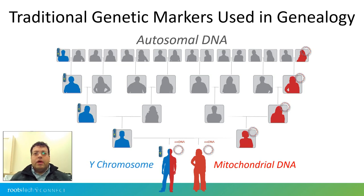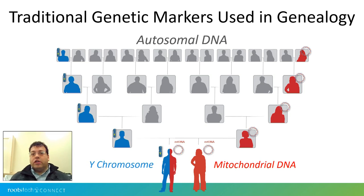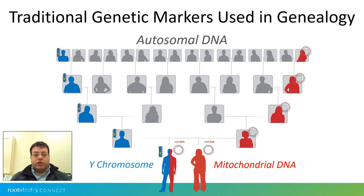In the case of mitochondrial DNA, it follows the maternal line — the straight, unbroken mother-to-daughter line. Both males and females have mitochondrial DNA, although only females can pass it on to the next generation, so it stops with a male. I have my mother's mitochondrial DNA, but none of my children have that mitochondrial DNA — they all get it from their mother, which is my wife.